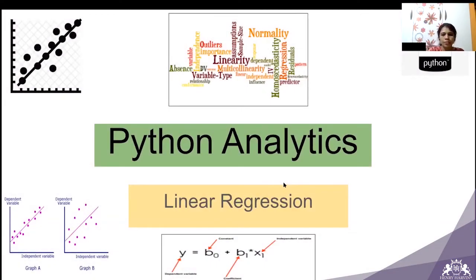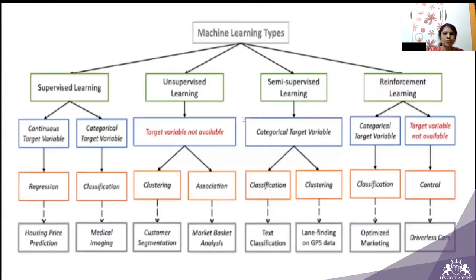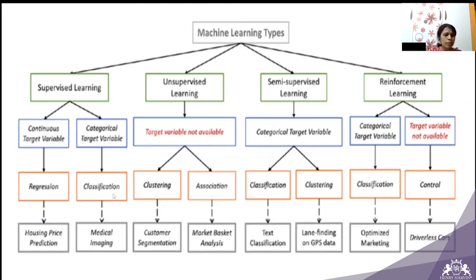Let's start with linear regression. When we talk about machine learning types, it is basically divided into four: supervised, unsupervised, semi-supervised, and reinforcement learning. In supervised learning, if the target variable is categorical data then it is classification; if it is continuous then it is regression. For example, housing price prediction is an example for regression and medical imaging is an example for classification.